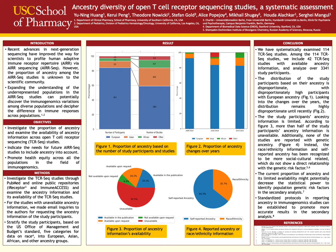We examined 114 T-cell receptor sequencing studies on PubMed and the online public repositories iReceptor and ImmuneCACCESS. For studies without ancestry information, we made email inquiries to the authors to request the ancestry information.